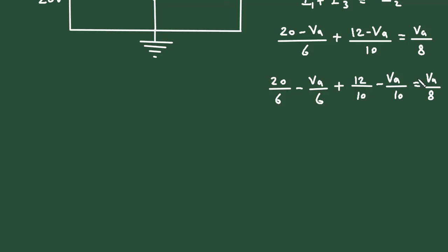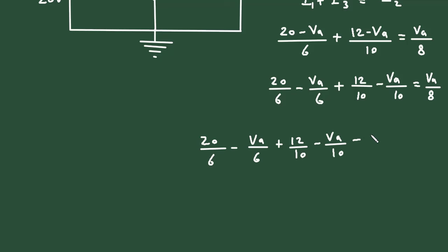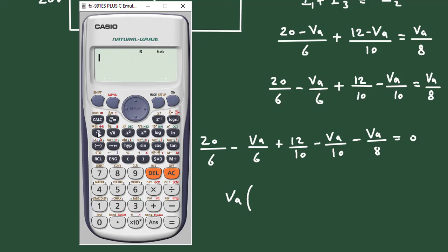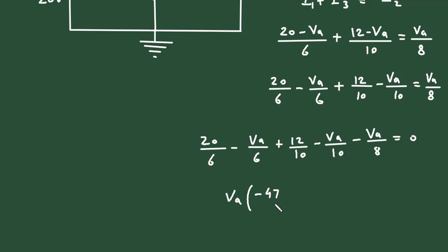Further simplifying and rearranging, if we take VA common, we get VA times (minus 1 upon 6, minus 1 upon 10, minus 1 upon 8), which equals minus 47 divided by 120.